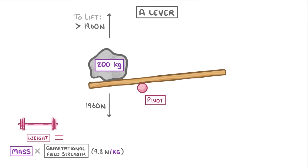If the distance between the pivot and the rock was 0.4 meters, then by using our equation we can work out the moment of the rock's weight, which would be 1,960 times 0.4, so 784 newton meters. And this would be a clockwise anti-clockwise moment around our central pivot.